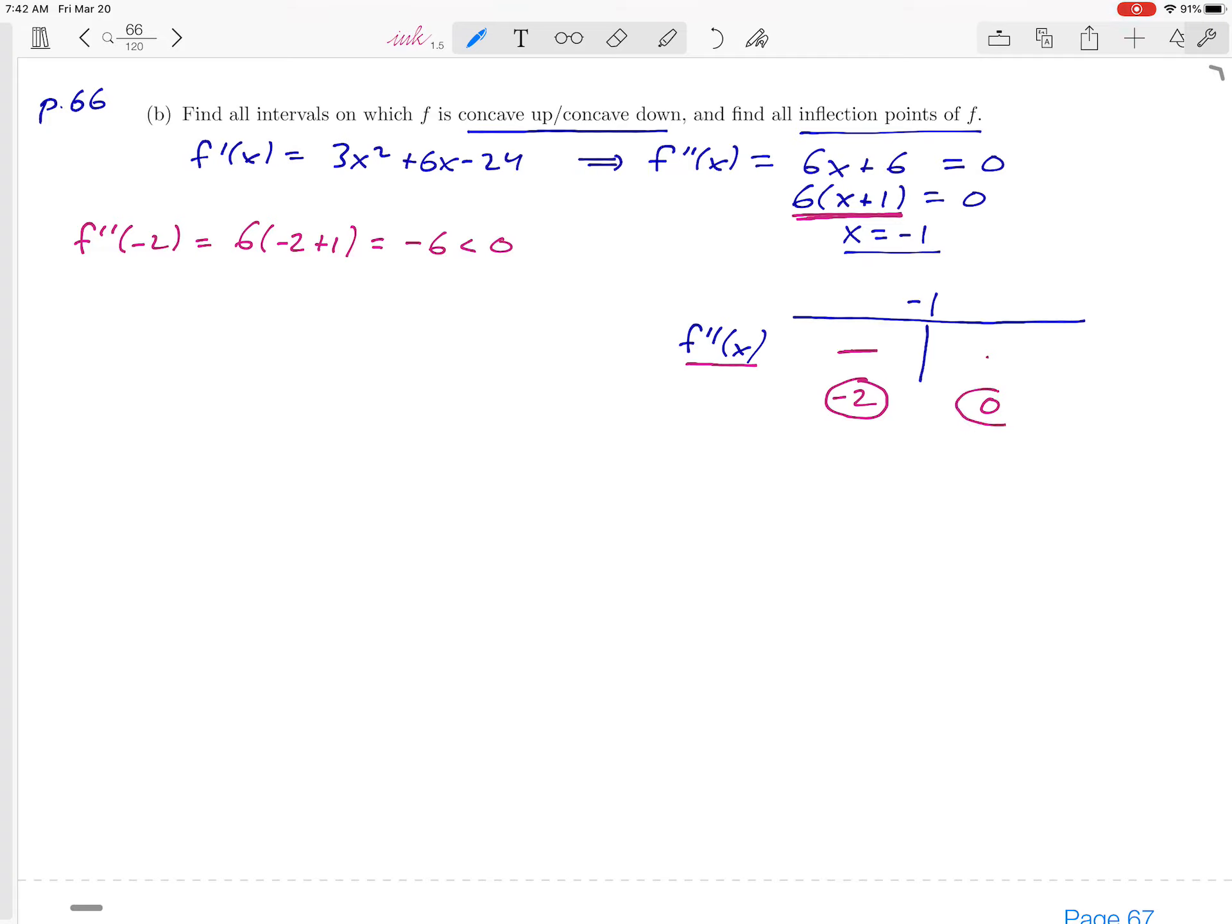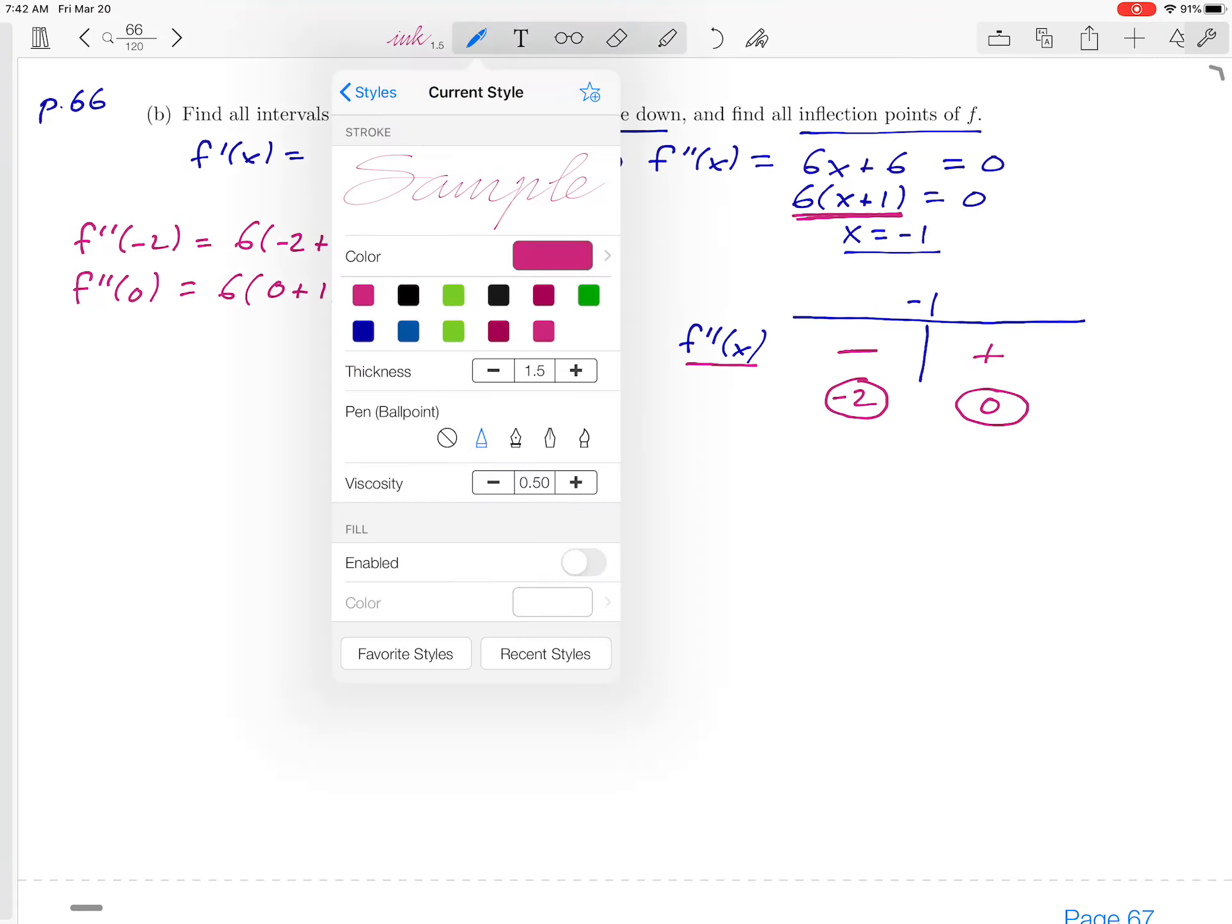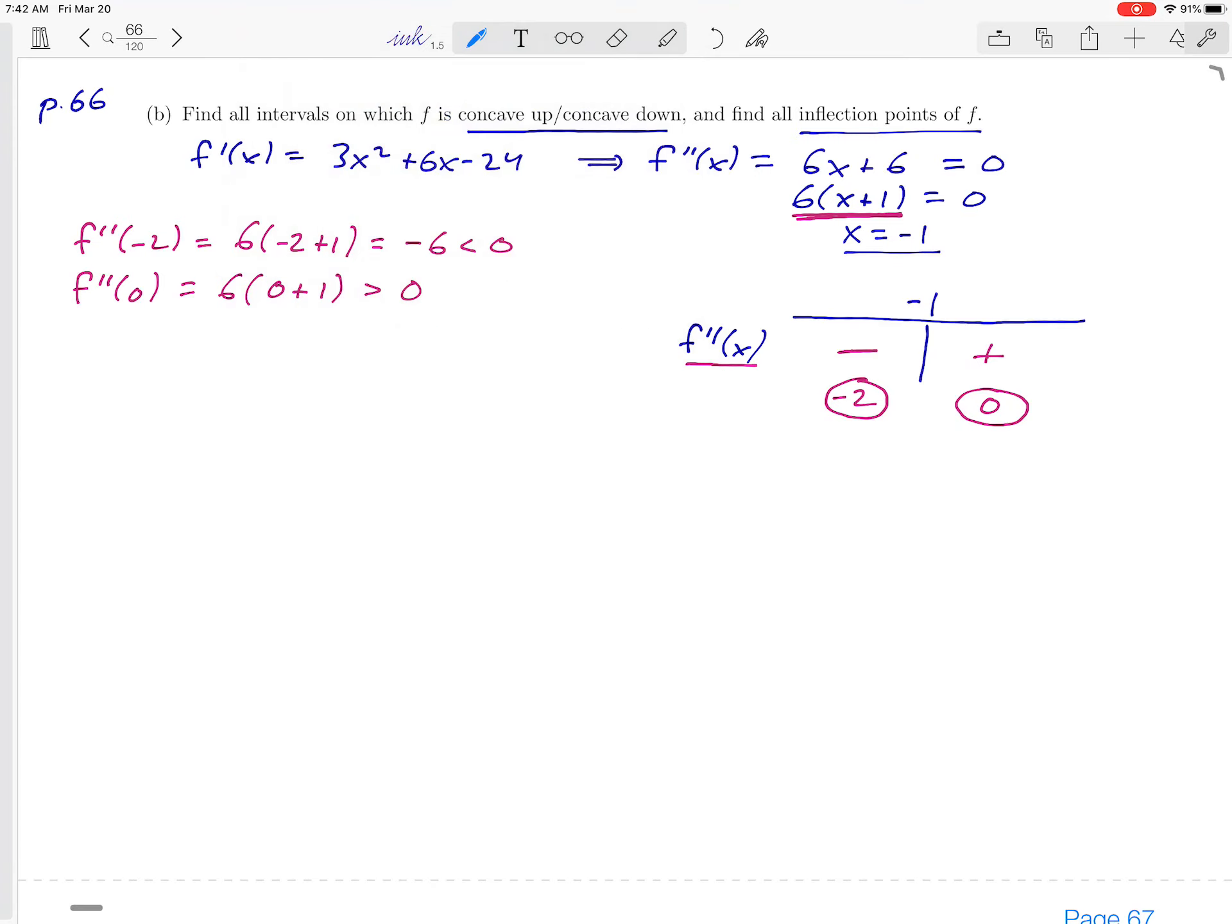And then we're ready for the next test value, 0. We're going to plug that into the second derivative. So 6(0 + 1)—this time we get +6, and so there's a plus sign in our sign chart. Now that we've finished the sign chart, it's a matter of figuring out what that's telling us and how we can use it to answer the question.